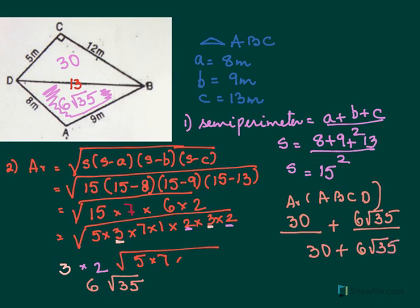Don't you add your 30 and 6. That's not correct. It's 30 plus 6 under root 35 meter square. This is the area of triangle BDC, and this is the area of triangle ABD. Thank you.